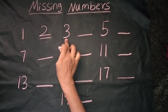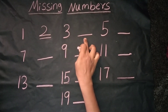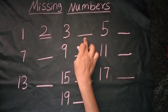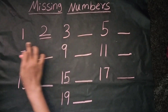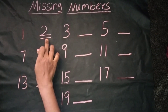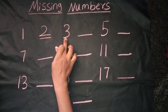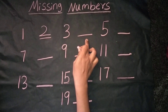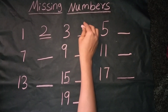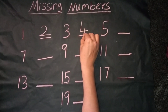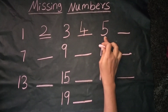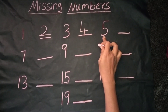We can see the number 3. The next number is — let's count from 1: 1, 2, 3, 4. Yes, it's correct. The number is 4. We can see the number 5.